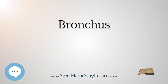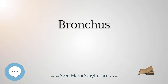The right main bronchus is wider, shorter, and more vertical than the left main bronchus. It enters the right lung at approximately the 5th thoracic vertebra. The right main bronchus subdivides into three secondary bronchi, also known as lobar bronchi, which deliver oxygen to the three lobes of the right lung: the superior, middle, and inferior lobe. The azygous vein arches over it from behind, and the right pulmonary artery lies at first below and then in front of it.